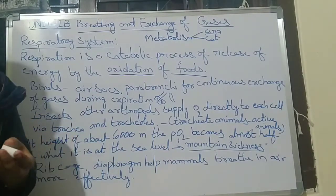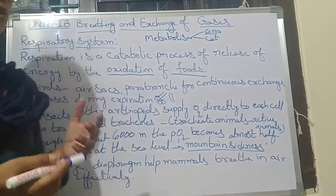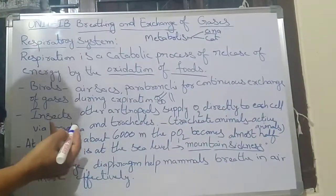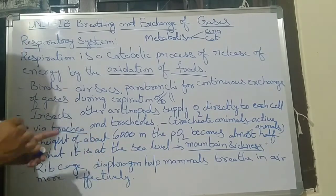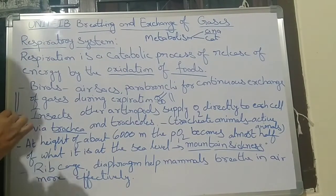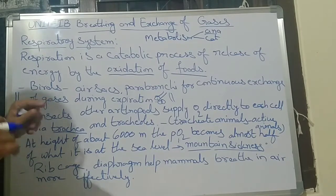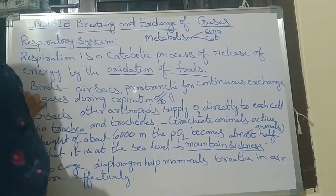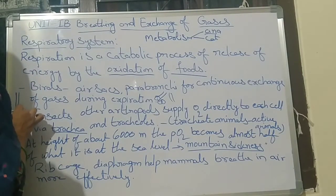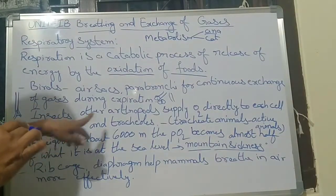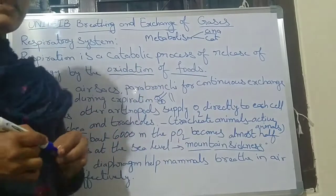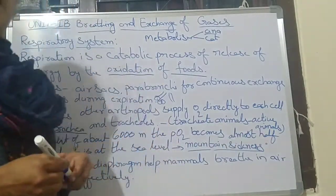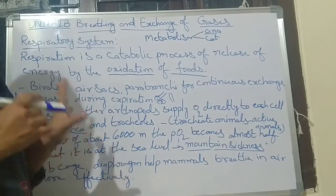In insects like cockroach and mosquito, and other arthropods, oxygen is supplied directly to each cell via trachea — a tube-like structure. The trachea is a big tube that divides into smaller tubes also called tracheoles. These are tracheal animals, and they are considered the most active animals. Birds and insects are the active animals.